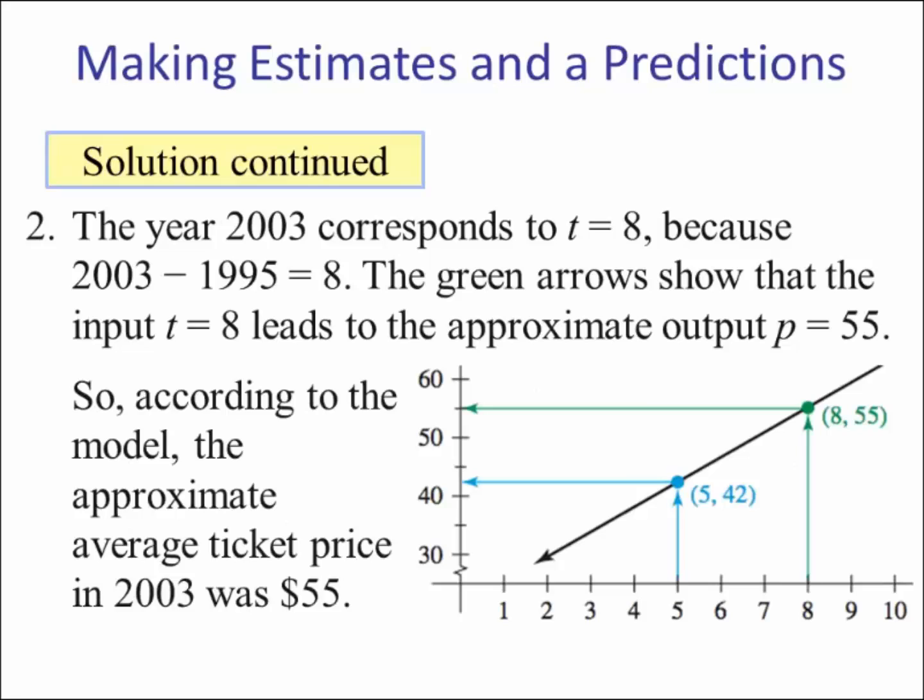Number two. The year 2003 corresponds to t equals 8 because eight years after 1995 is 2003. So if we go to the green, when t is 8, we have a predicted y of 55. So we would interpret this as: according to the model, the approximate average ticket price in 2003 was $55.